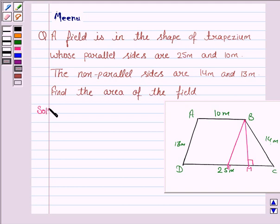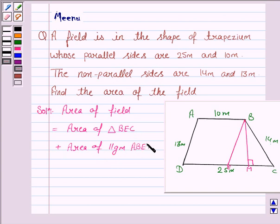So let us now move on to the solution. The area of the field is equal to the area of triangle BEC plus the area of parallelogram ABED. Now, we have drawn BE parallel to AD. Therefore, BE is equal to AD, that is 13 meters. So in triangle BEC, BC is 14 meters and EC is 15 meters.